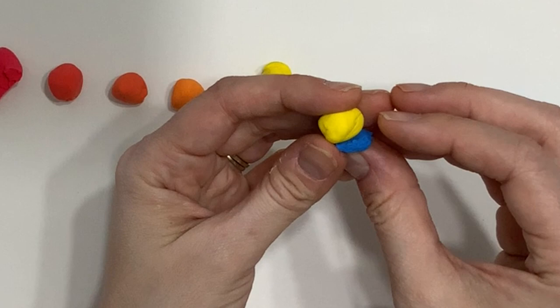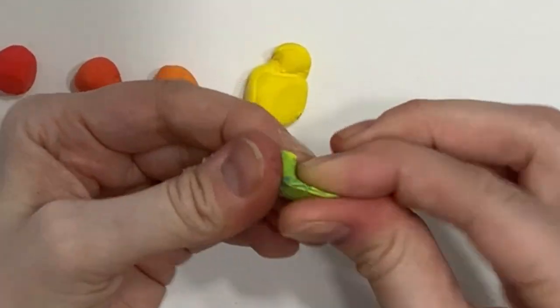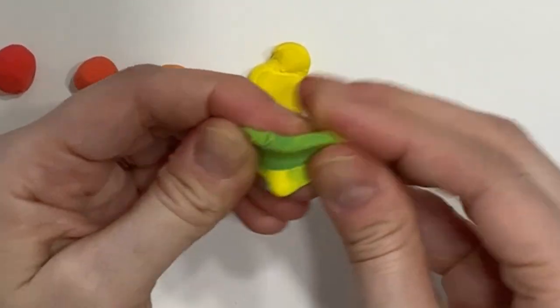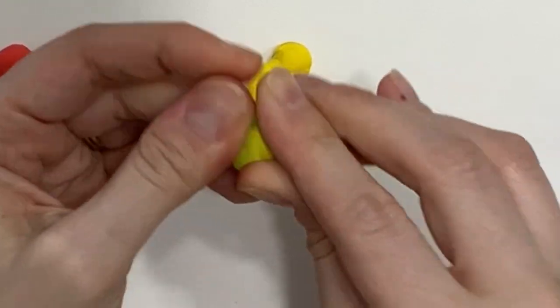Now let's move on to combining our next two primaries, which are yellow and blue. You'll want to use a little more yellow than blue, since blue is a darker color.